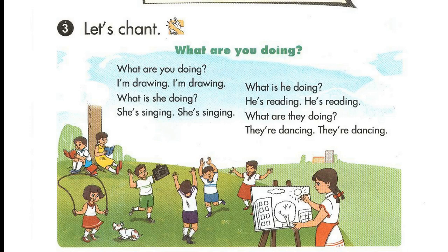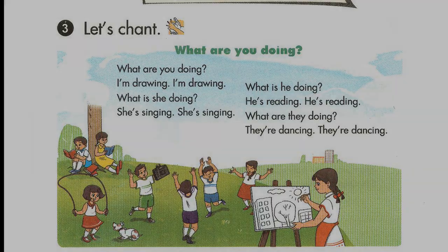Page 56. Lesson 3. Activity 3. Let's chant: What are you doing? What are you doing? I'm drawing. I'm drawing. What is she doing? She's singing. She's singing. What is he doing? He's reading. He's reading. What are they doing? They're dancing. They're dancing. She's singing.